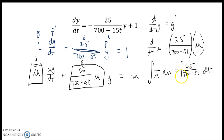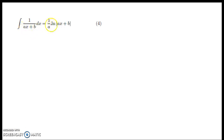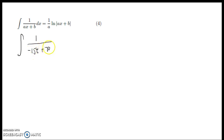Now I'll integrate. The left-hand side is simply the natural log of the absolute value of μ. The right-hand side — if I factor out a 25 — by rule number 4 on an integral sheet, we have that 1 over something of the form ax plus b equals 1 over a times the natural log of ax plus b. We have the integral of 1 over, and if I write this as negative 15t plus 700, I can clearly see what my a and b are.